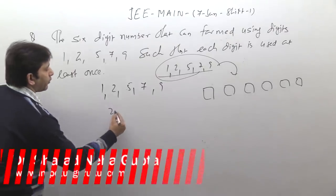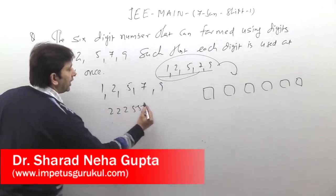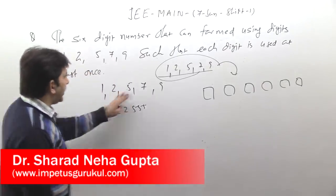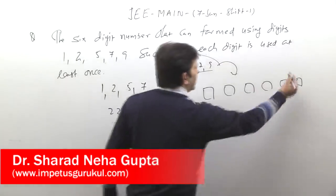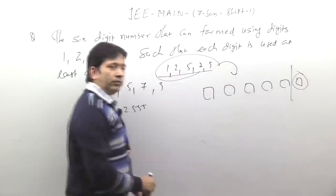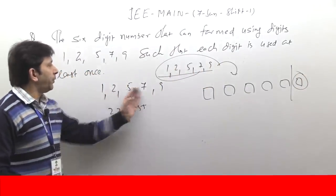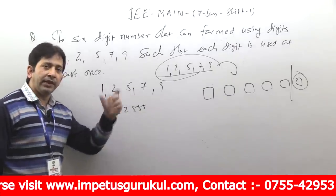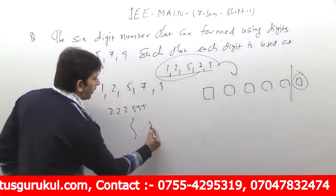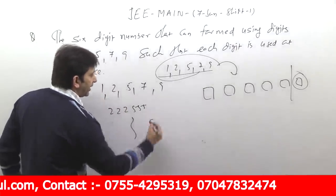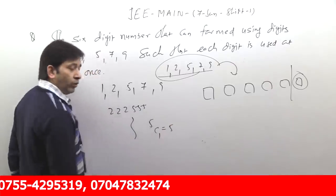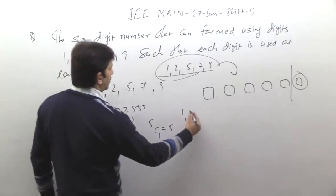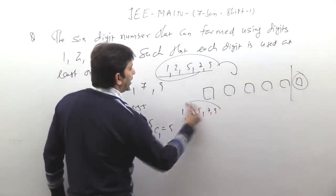It is not that you can take 2, 2, 2, 2, 2, and 5. Each digit must appear. Obviously, once each digit appears, one place will be saved. Now one extra place will be filled by one digit — one can be placed, two can be placed, five can be placed, seven can be placed, nine can be placed. The best way is to take the first five digits one each, then the total of the five-digit arrangement is made from 1, 2, 5, 7, and 9.